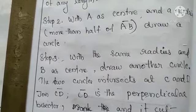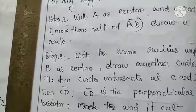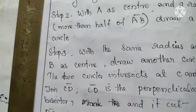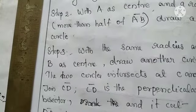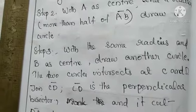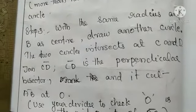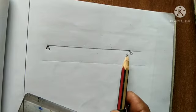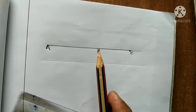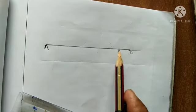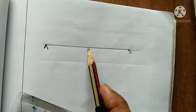You can verify using your divider. The meeting point of the two arcs, let it be O. You can check that AO and OB are equal — then only it will be the bisector, and O is the midpoint of the given line. So we can draw the perpendicular bisector through the given line segment. Let AB be the given line segment; this bisector should divide AB into two equal parts, meaning that line should meet at the midpoint of AB.